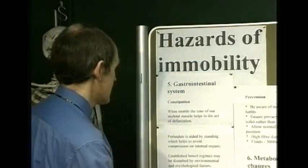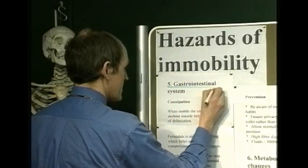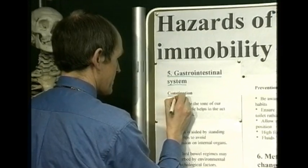So far we've looked at the cardiovascular system, respiratory system, musculoskeletal system, and urinary system. Let's now go on and think about the adverse effects of immobility on the gastrointestinal system. One of the main problems here is constipation, so we'll start off by thinking about constipation.